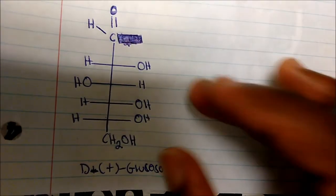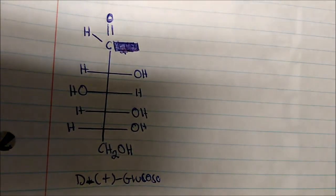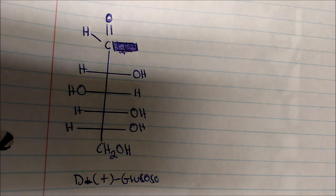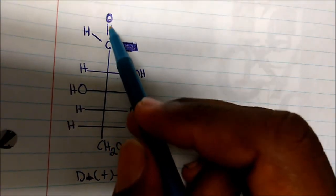Now for this next example shown in a Fischer projection — this is D(+)-glucose. How many chiral centers are present? The top carbon has a double bond, so we don't care about that one — no free rotation, not chiral.